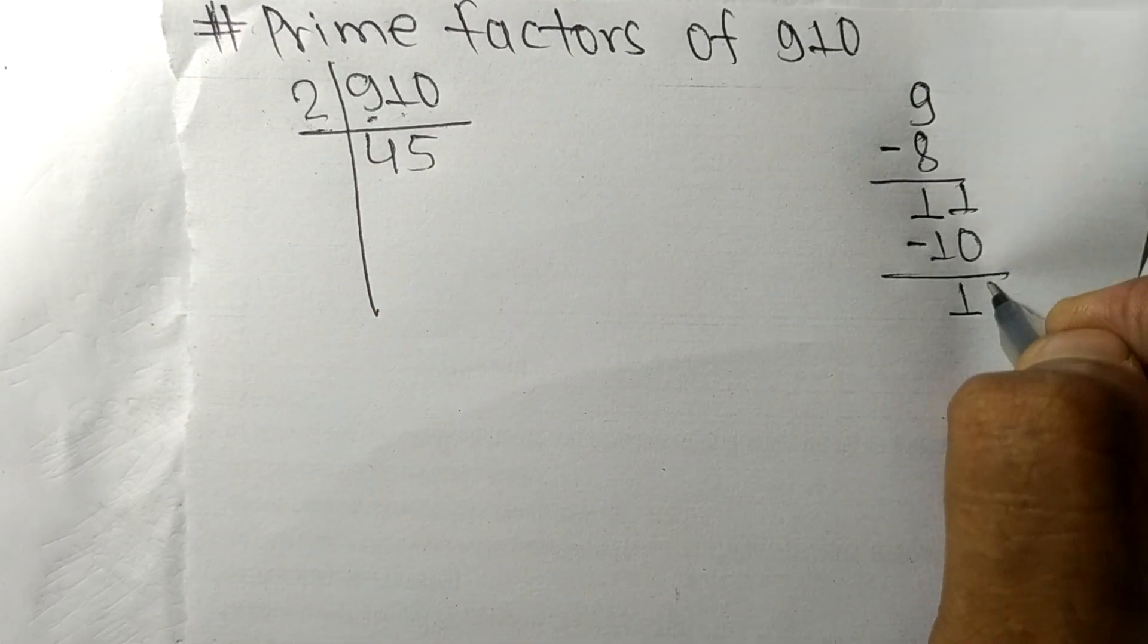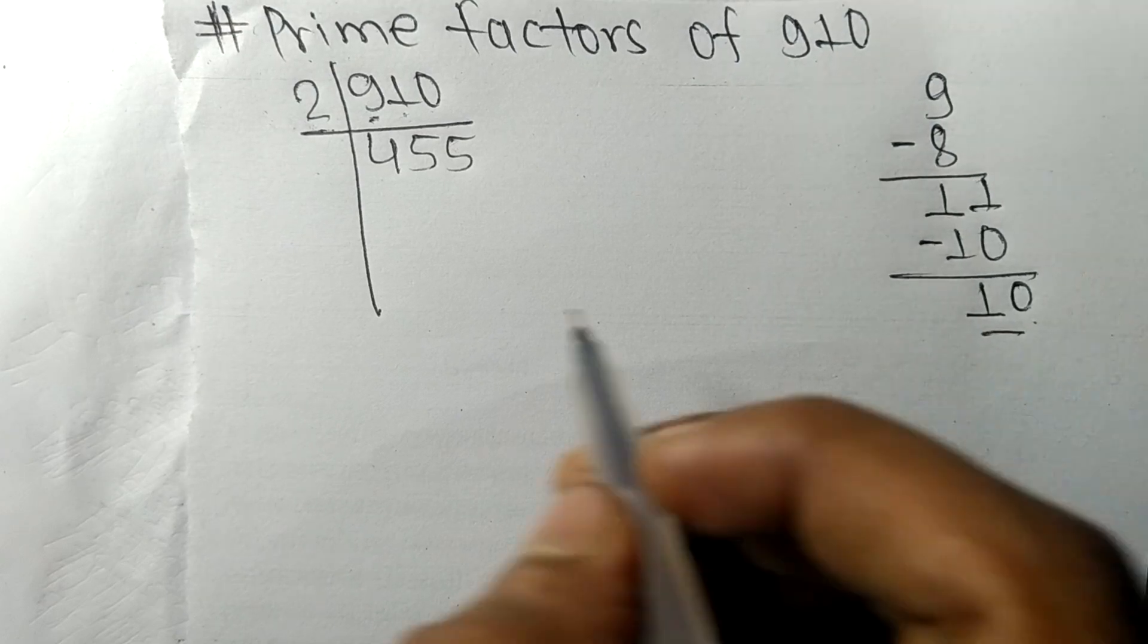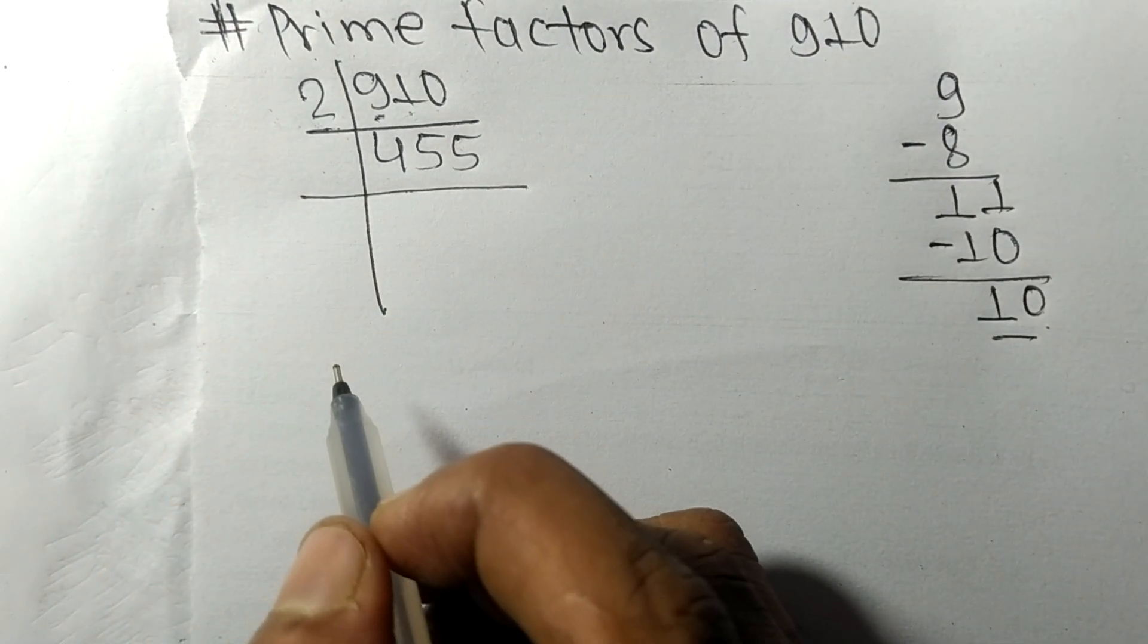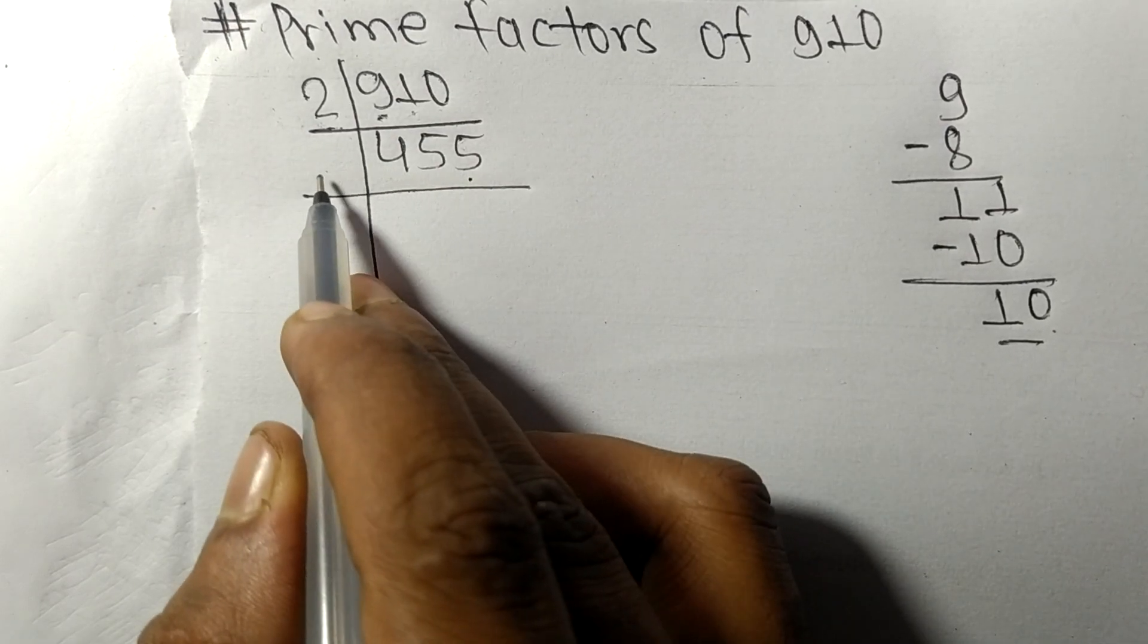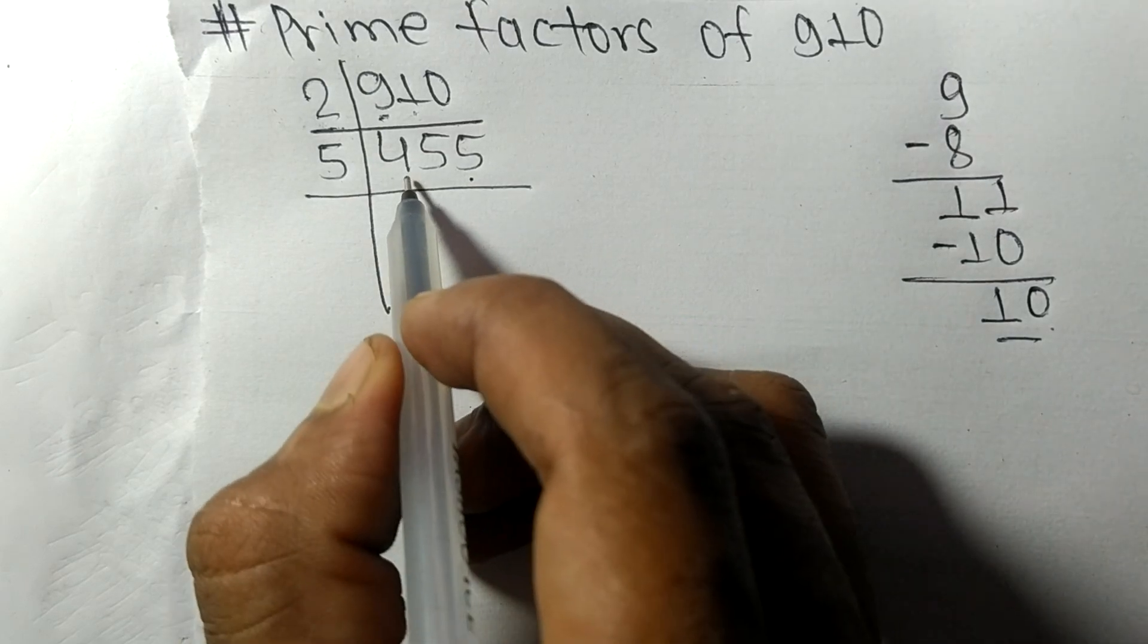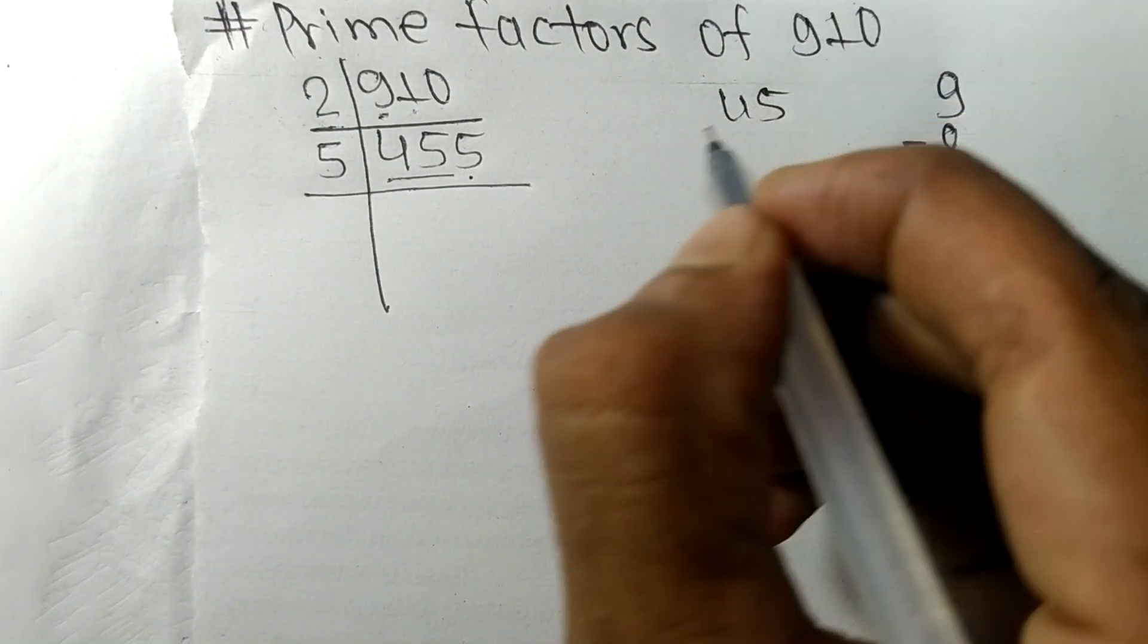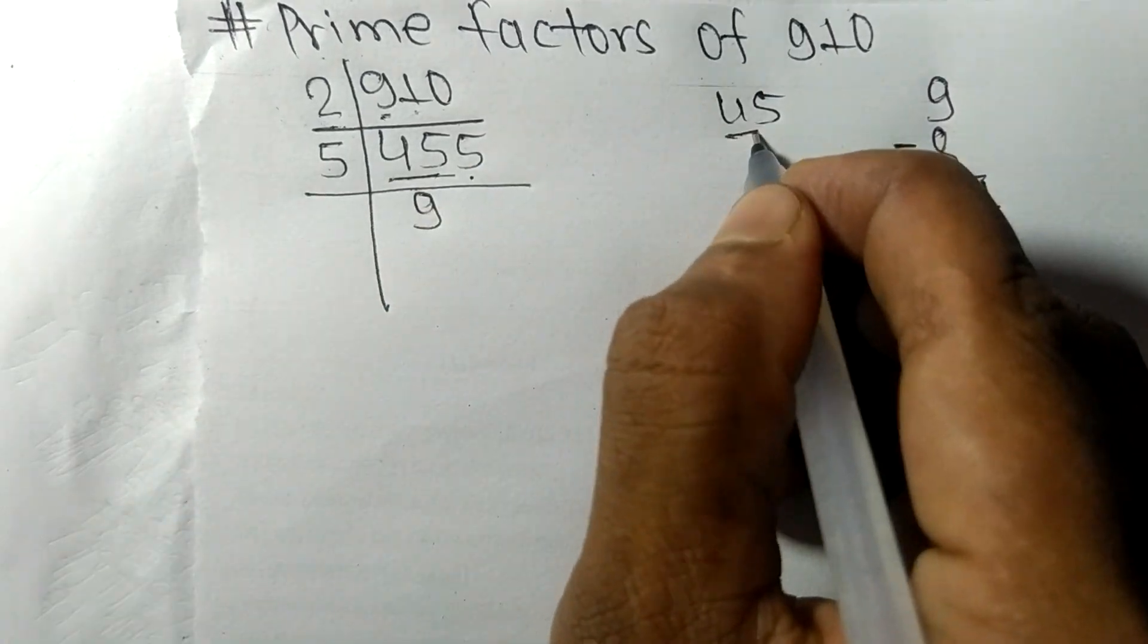Now we got 455 and it has 5 at last, so it is exactly divisible by 5. First we have 45, so 5 times 9 means 45, and 5 times 1 means 5.